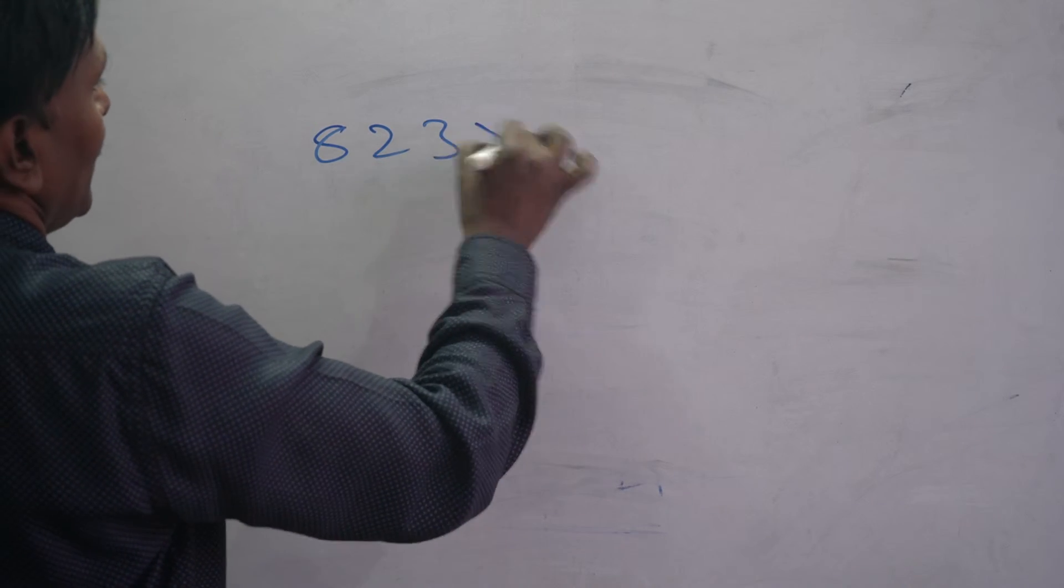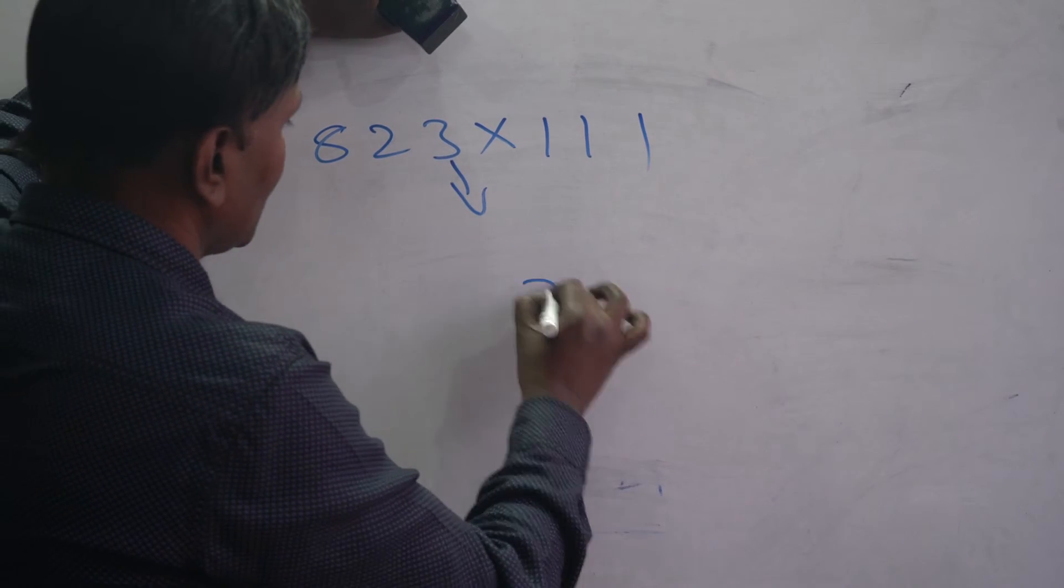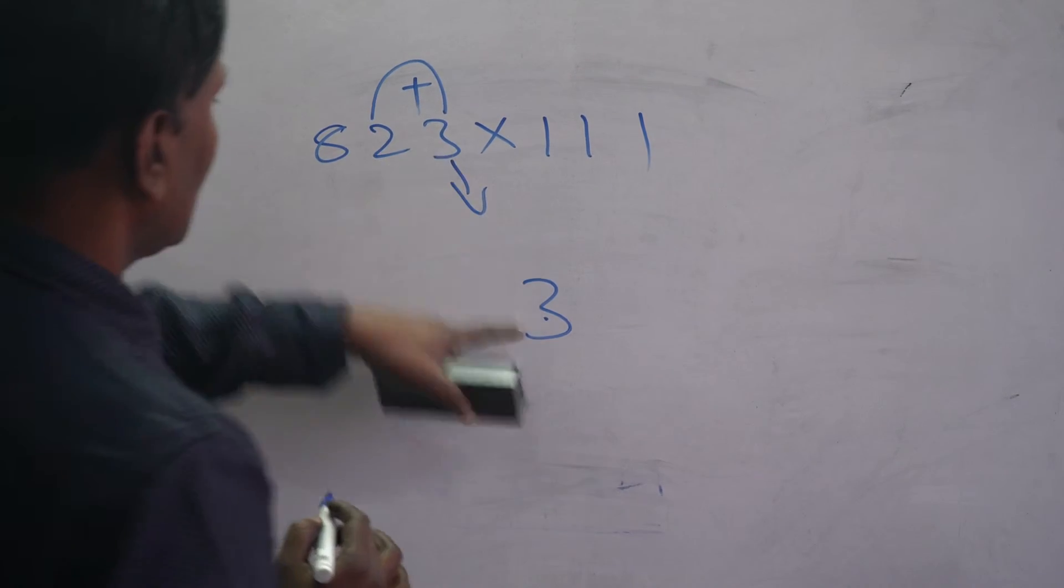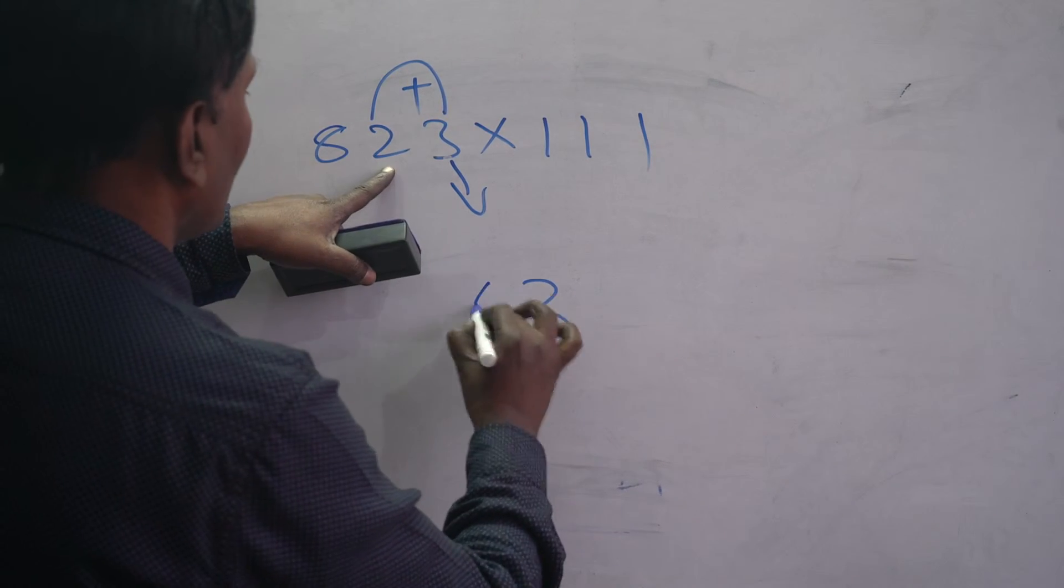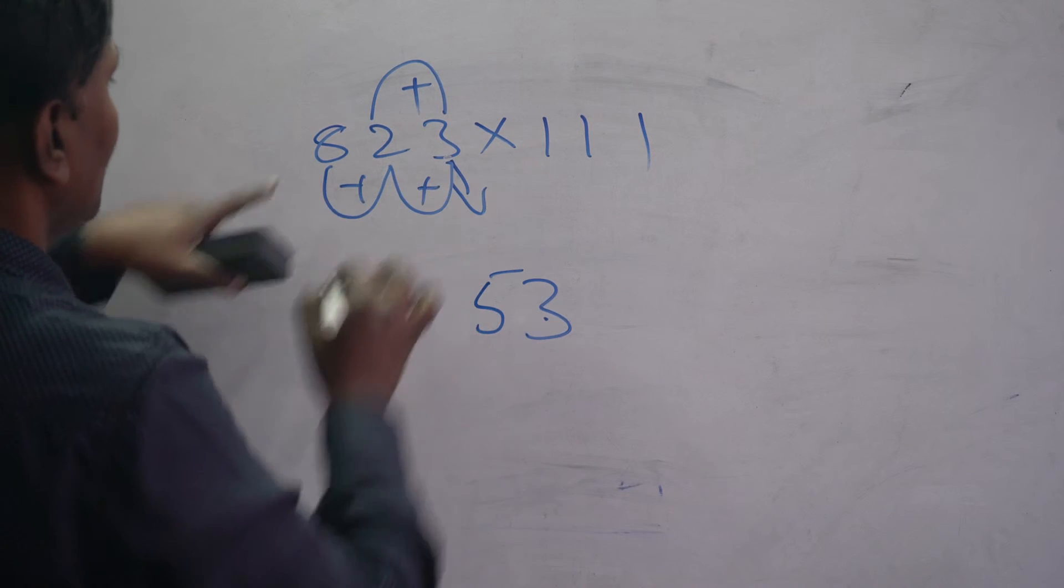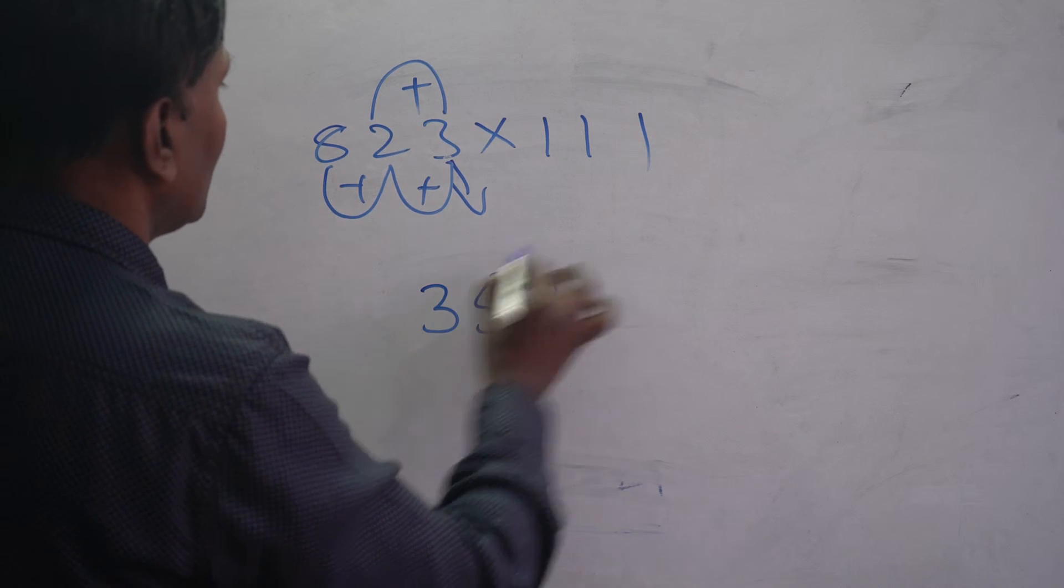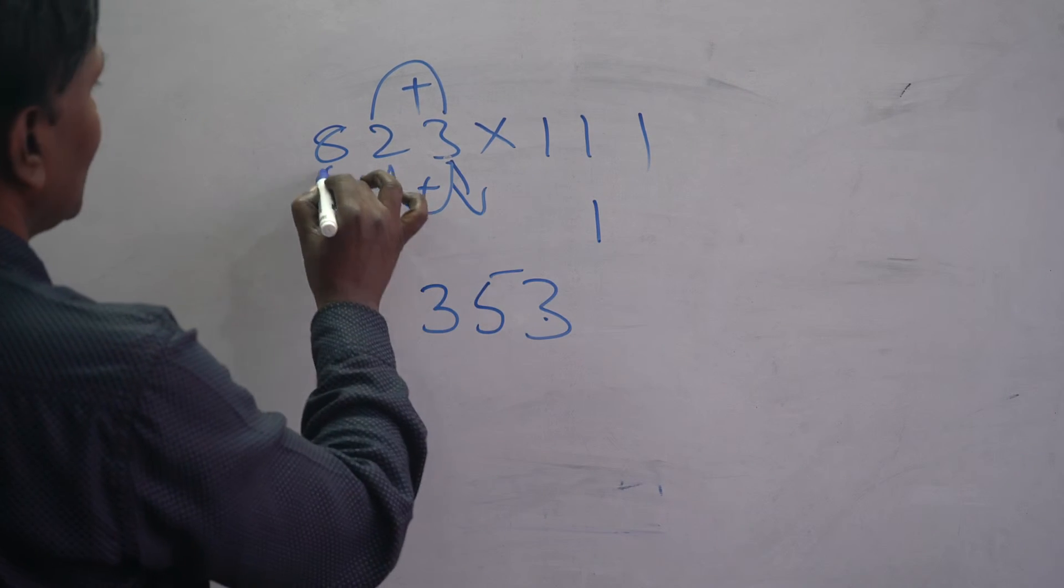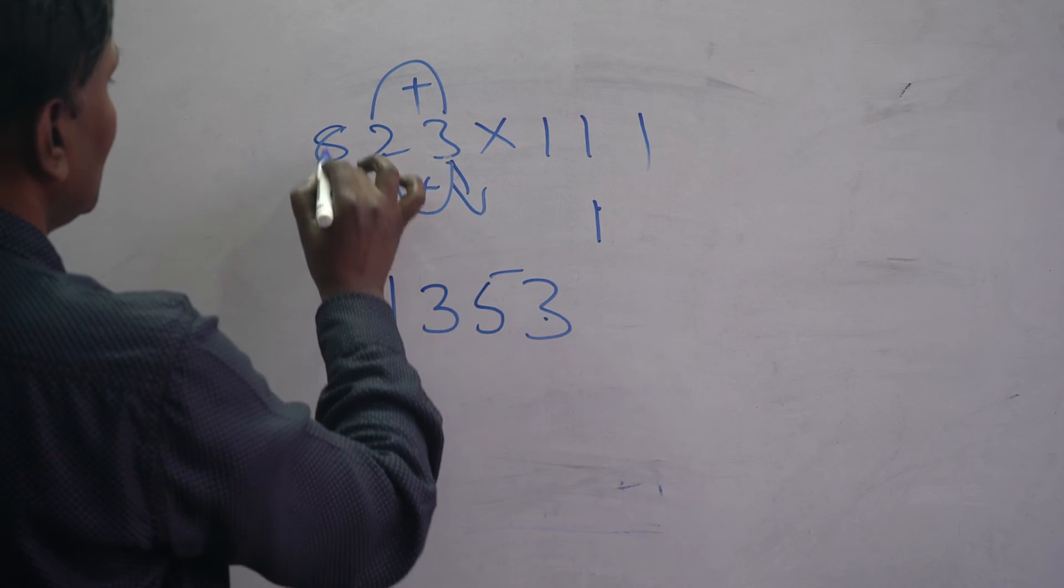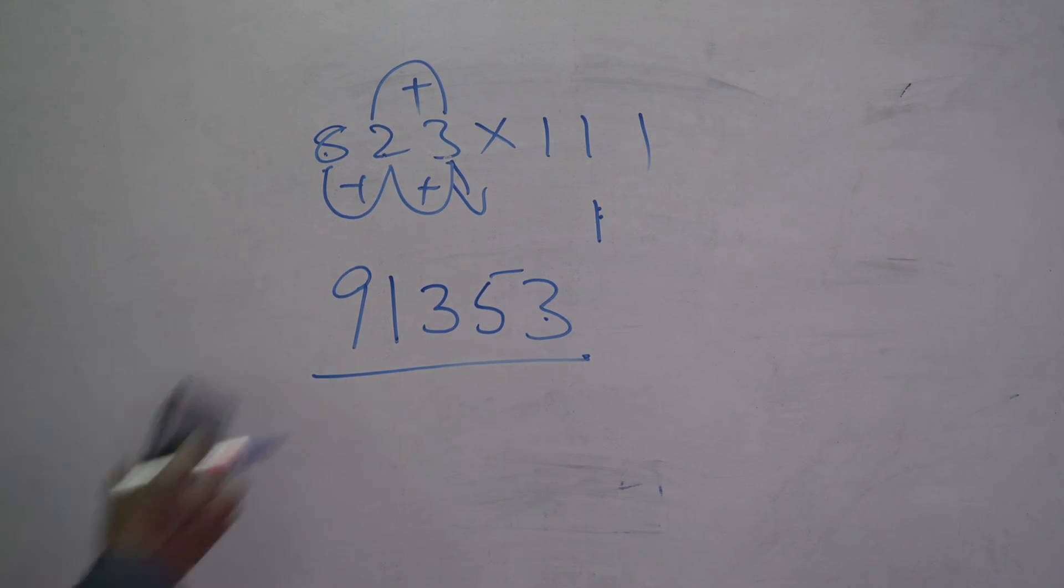One more example: 823 times 111. First, write it directly: 3, 2 plus 3 is 5. Then 8 plus 2 is 10, 10 plus 3 is 13, carry 1. 8 plus 2 is 10, 10 plus 1 is 11, carry 1. 8 plus 1 is 9. This is the output: 91,353.